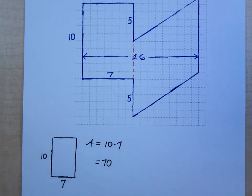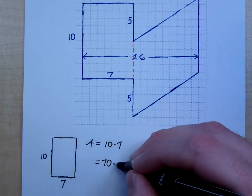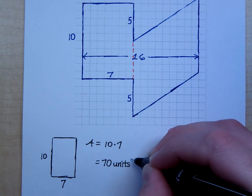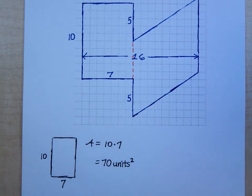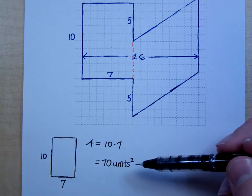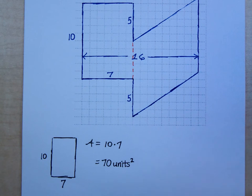I didn't tell you if it was centimeters, inches, feet, or miles. So you will actually write the word 'units.' That word means whatever the units happen to be — if it was centimeters, it'd be square centimeters. So we write 'square units' as the generic word for whatever the measurement happens to be.